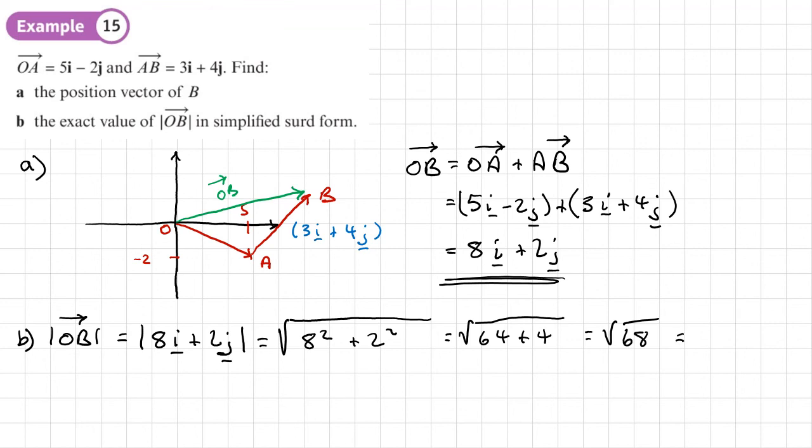Now 68 is the same as 4 times 17, now you can use your calculator to get that. So that's root 4, root 17. So that would be 2, root 17, but you don't need to do that, just type that in a calculator to get the answer.